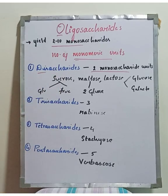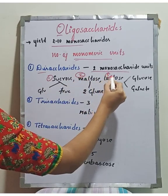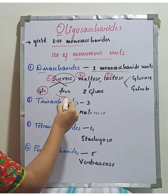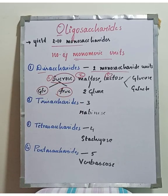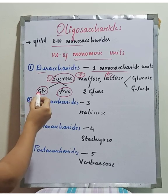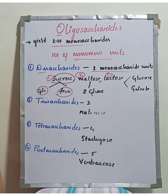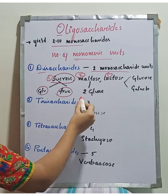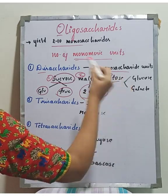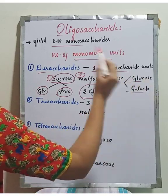Examples of disaccharides include sucrose, maltose, and lactose. In hydrolysis, sucrose yields glucose and fructose; maltose yields two glucose units; and lactose yields one glucose and one galactose molecule.